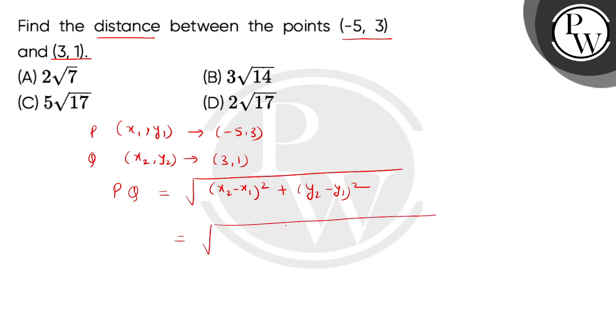This is square root of x₂'s value is 3 and x₁'s value is minus 5. So this will be 3 minus (-5) squared, plus y₂'s value is 1 and y₁'s value is 3 squared. So this equals square root of 3 plus 5.